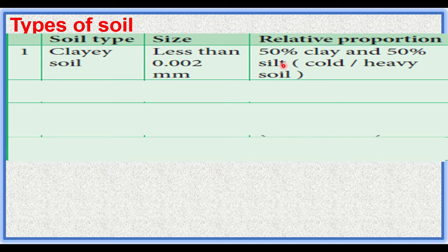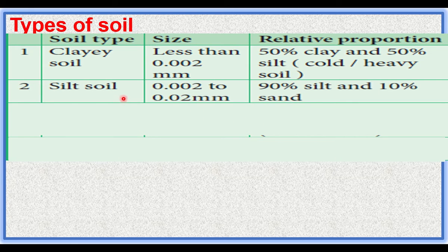Clay soil cannot support the growth of plants — it cannot facilitate plant growth because water logging and water stagnation occur, and the soil is poorly aerated. Silt soil has a particle size ranging between 0.002 to 0.02 mm, composed of 90% silt and 10% sand.